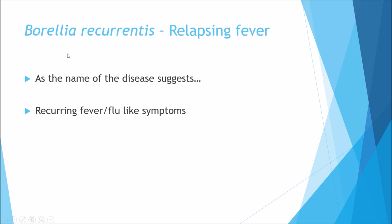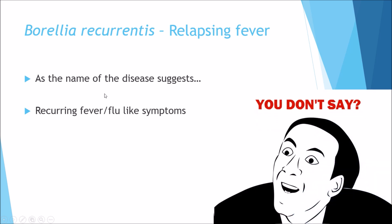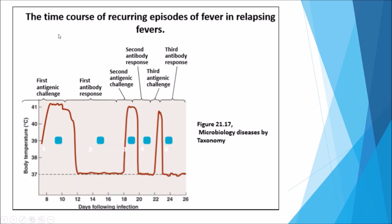Next we look at Borrelia recurrentis, which causes relapsing fever. As the name suggests, it is a recurring fever or flu-like symptoms. Looking at a graph of the disease timeline: the fever lasts around four days, body temperature rapidly rises up to 41°C, the body fights it off, then all of a sudden there is another spike where it recurs, and so on. The frequency and duration of these episodes decreases gradually over time as the body builds a stronger immune response.